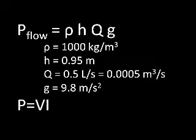The power produced by the turbine is found by the second equation, p equals vi, where v is the voltage, and i is the current flowing to the LEDs.